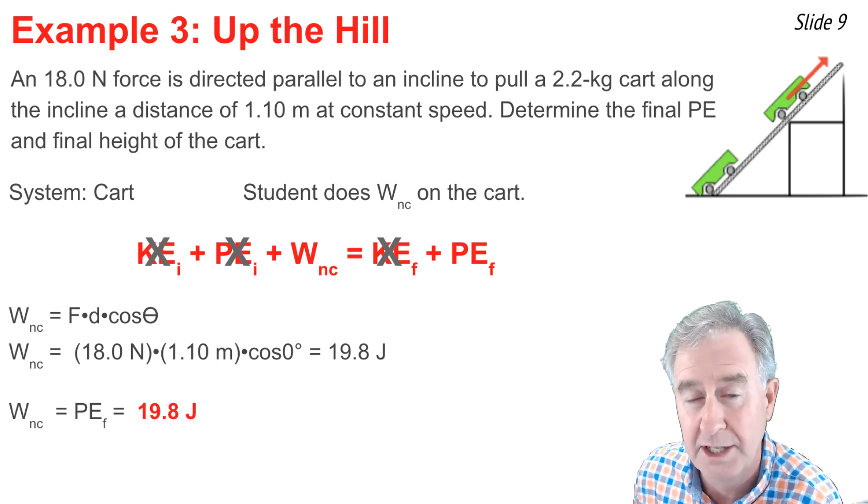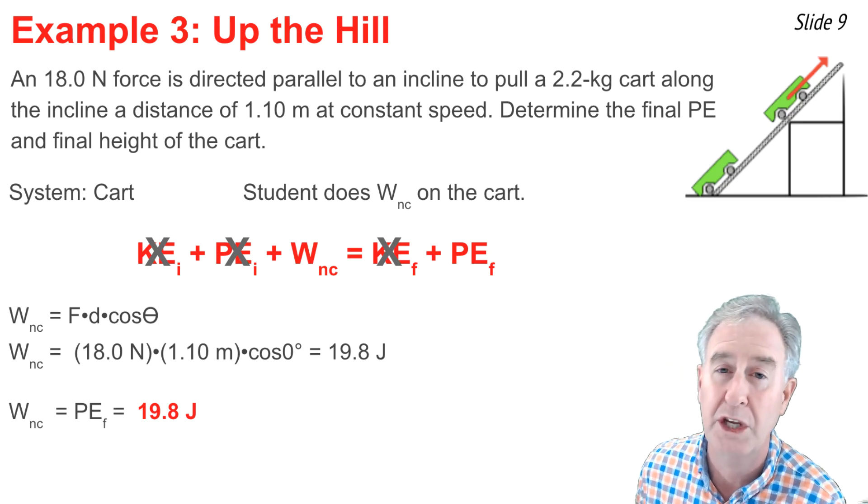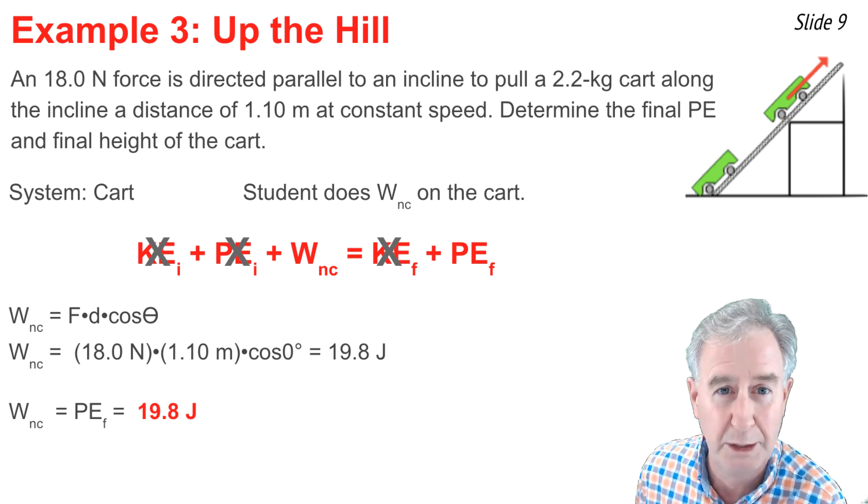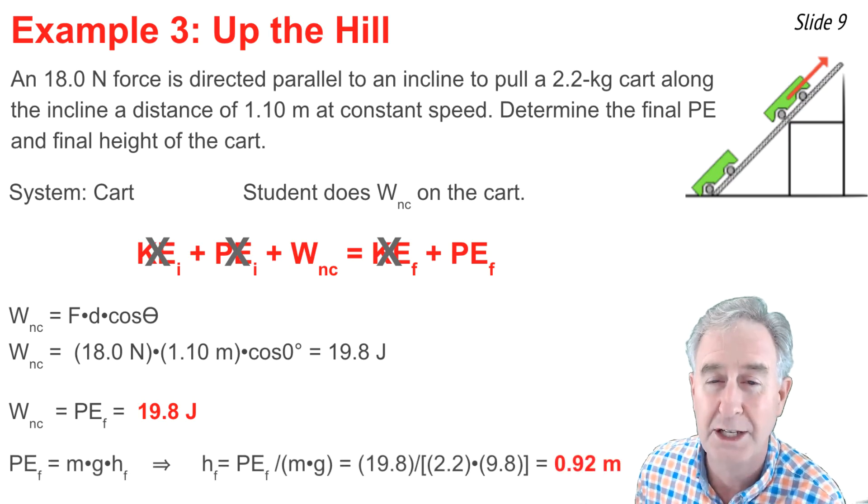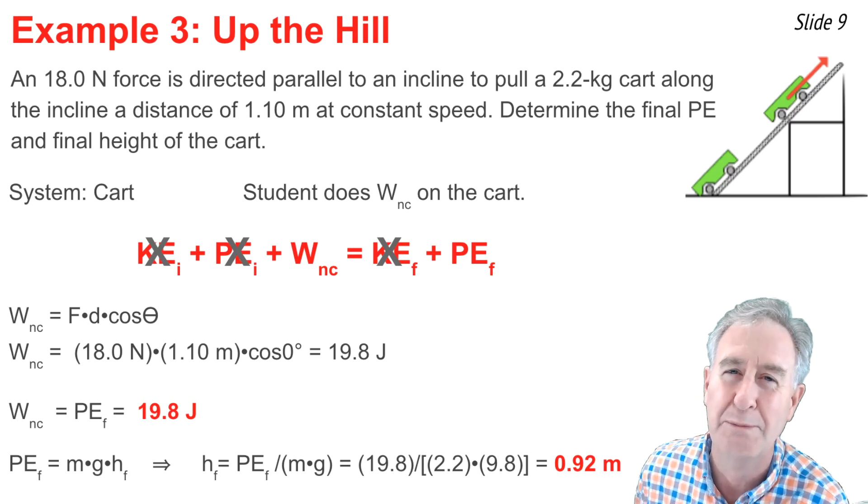Now the second question is how high does the cart get pulled? So I'm going to say PE final equal MGH final. I know what the M is, I know what the G is, I know what the PE final is, and I can substitute that all in and solve for H_F, and it comes out to be 0.92 meters.